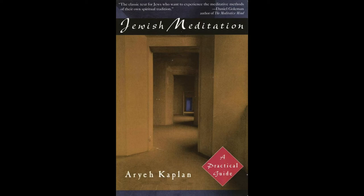The next step is to isolate the image. If one were visualizing the letter Aleph, one would attempt to isolate it and rid the mind's eye of all other imagery. This is known as hewing, or Chatziva. The analogy is to hewing out a stone from the surrounding rock — designating the desired stone and then hewing away the extraneous stone. One does the same thing in the mind, hewing away all extraneous imagery surrounding the desired form, until all that is left is the image one desires.